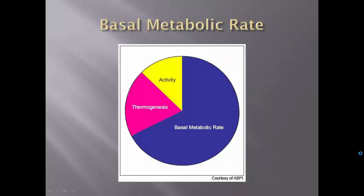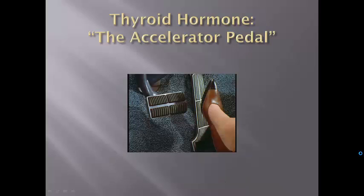The basal metabolic rate is the rate at which your cells use energy. Your cells use energy in a couple of different ways: from activity, from thermogenesis or creating body heat, and from the basal metabolic rate — how much energy is used while at rest. 60 to 75 percent of all the energy in your body is used for the basal metabolic rate. Think of thyroid hormone like the accelerator pedal in your car: when you step on it, the car speeds up; take your foot off the gas and the car slows down.